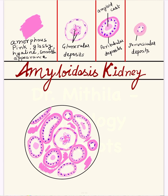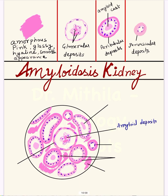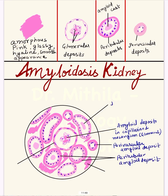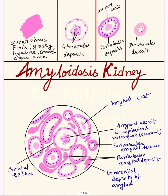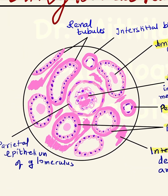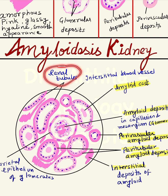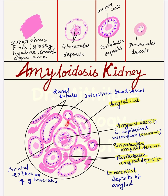The last part is the labeling. You label the amyloid deposits in the glomeruli, then perivascular amyloid deposits, peritubular amyloid deposits, amyloid cast present in the lumen, and interstitial deposits of amyloid protein. You also label the parietal epithelial cell layer and the tubules. This is how the final diagram will look, with all structures and amyloid deposits clearly labeled.